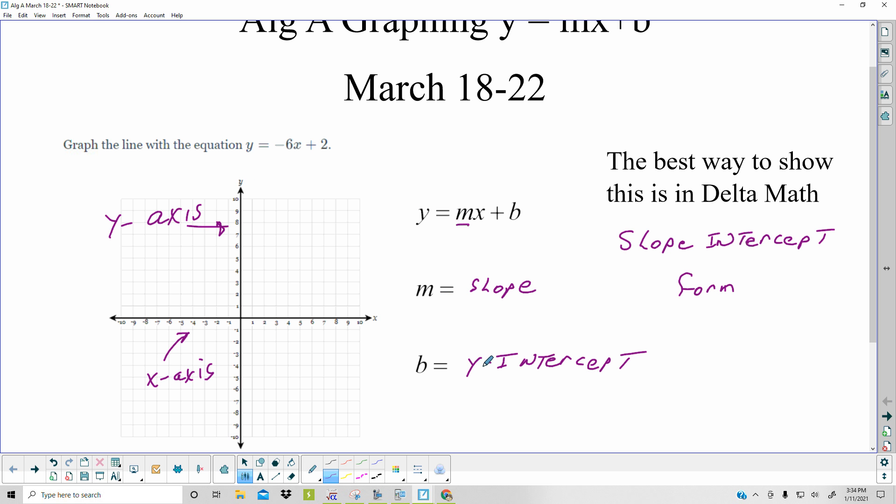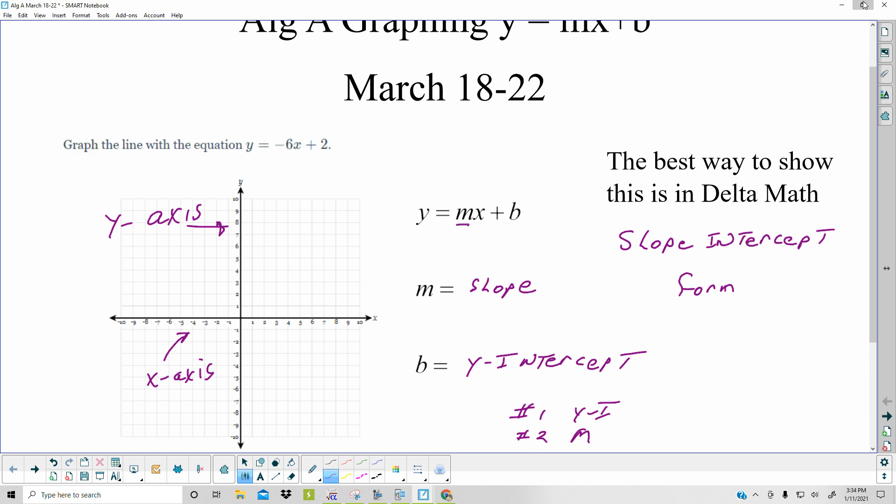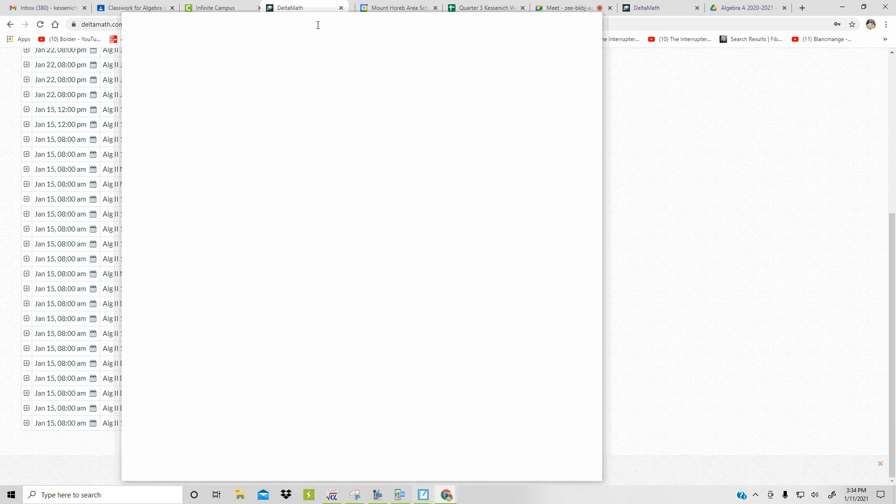So to show you how to do this in Delta Math, the first thing you're going to do is graph the y-intercept. The second thing you're going to do is do the slope. So I'll minimize this so I can both write on it and do it on Delta Math.